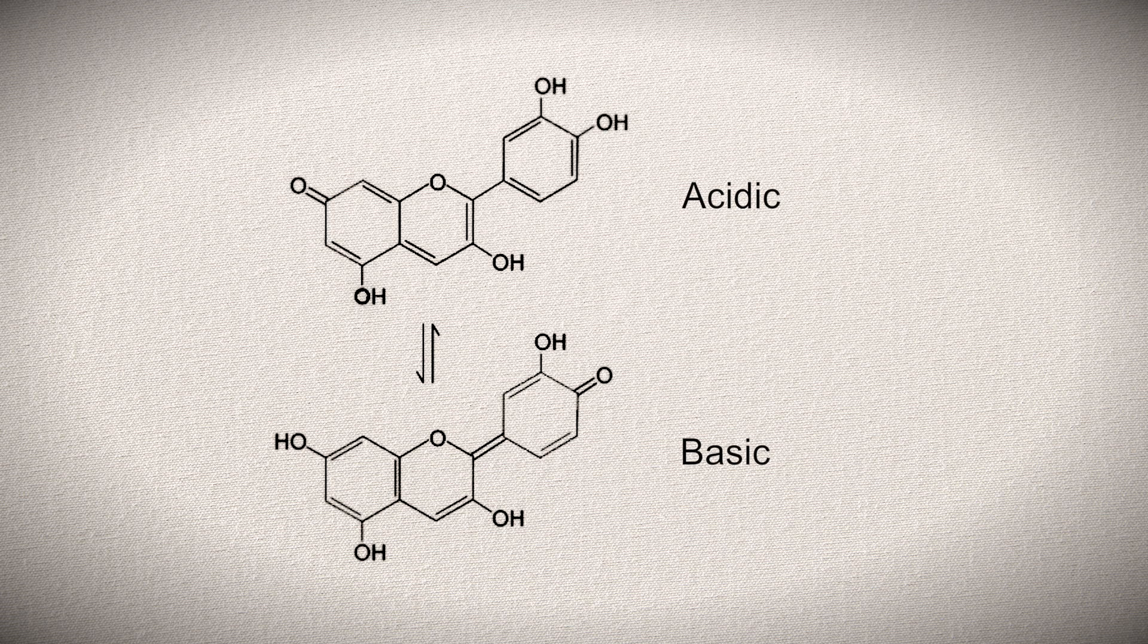Here, it loses a hydrogen ion changing double bonds around, and the hydroxyl is converted to a negatively charged oxygen. Therefore, this is the anion form, and it is the green-yellow color that we will see.